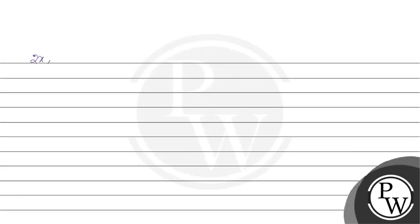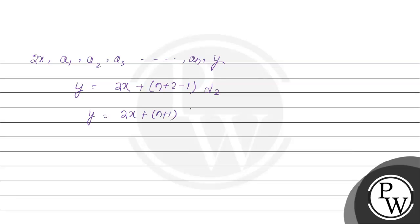Again, given that 2x is the first term, the series is a1, a2, a3, and the last term is y. So for the last term y, the formula gives: 2x plus (n plus 1) multiplied by d2 equals y. That implies d2 is equals to (y minus 2x) divided by (n plus 1). Mark it as equation 2.